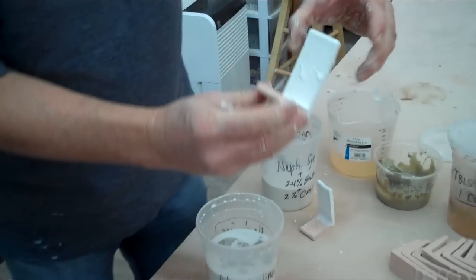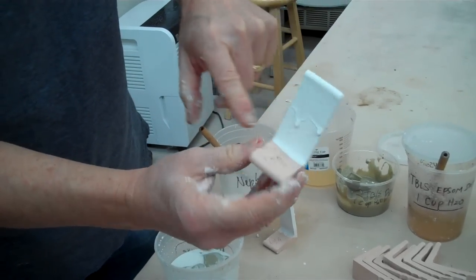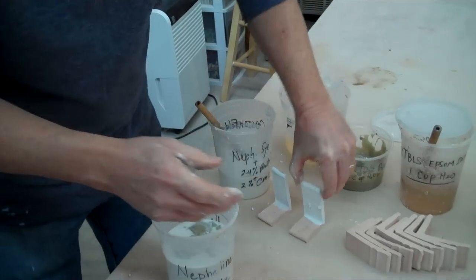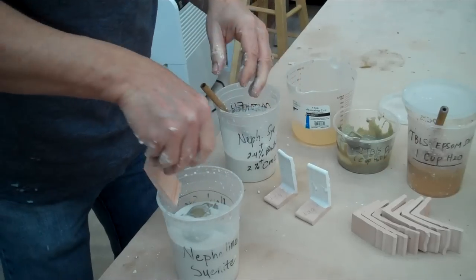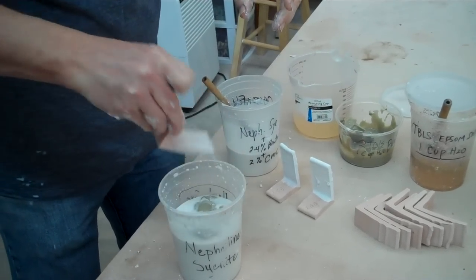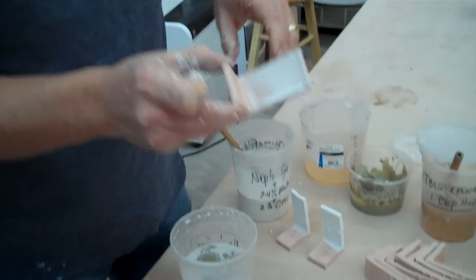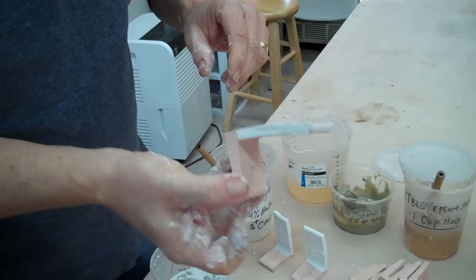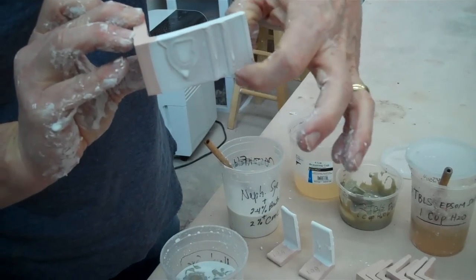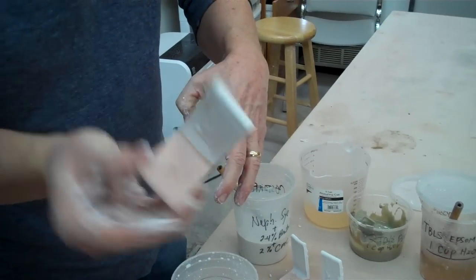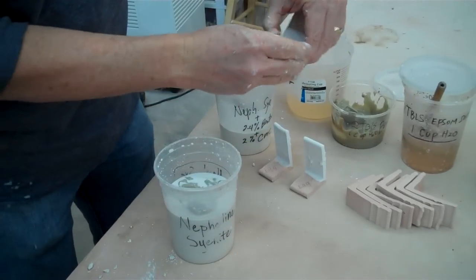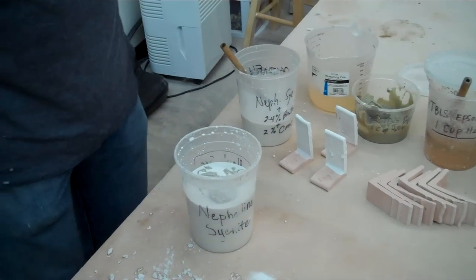If you dip and you see it dripping like this, that's an indication of a deflocculated slip. Let me see if I can dip this before I put the bentonite in. But you can see the way it dries, it's drying real quickly and leaving hanging drips. That's an indication that it's deflocculated.